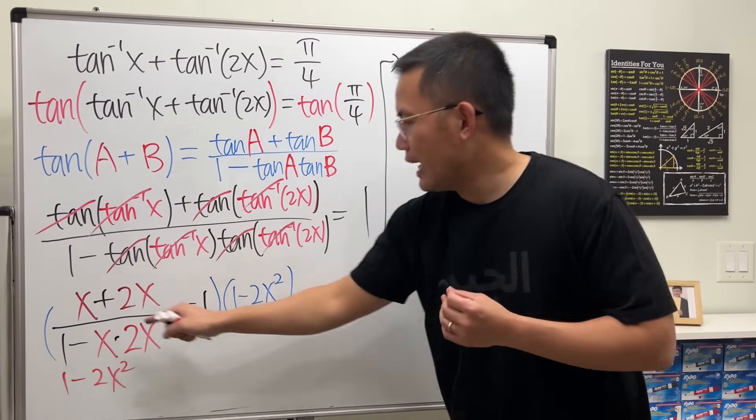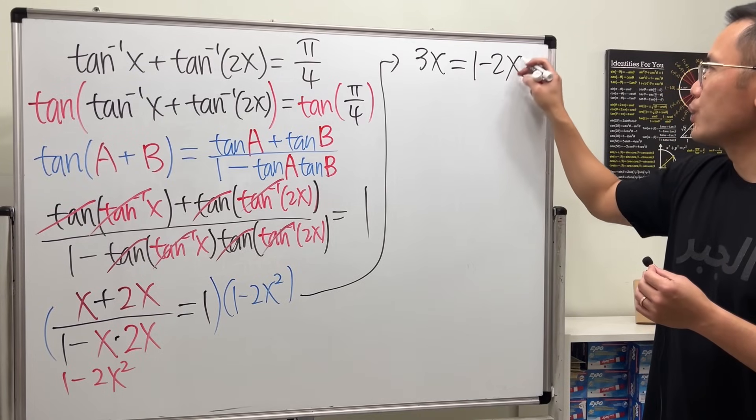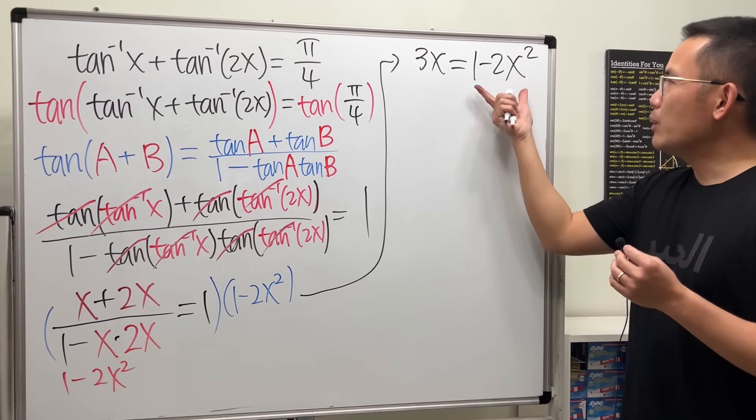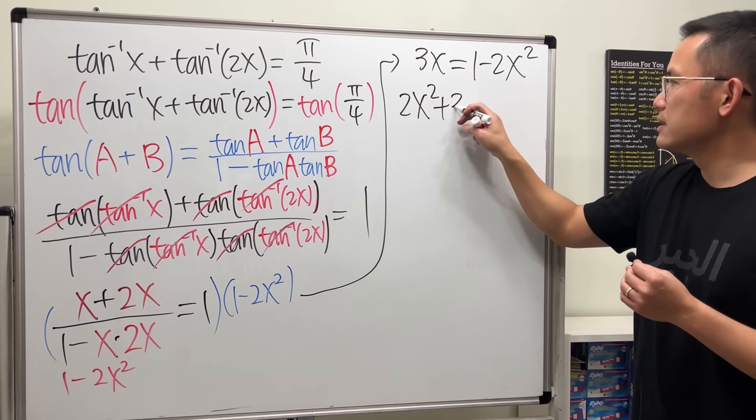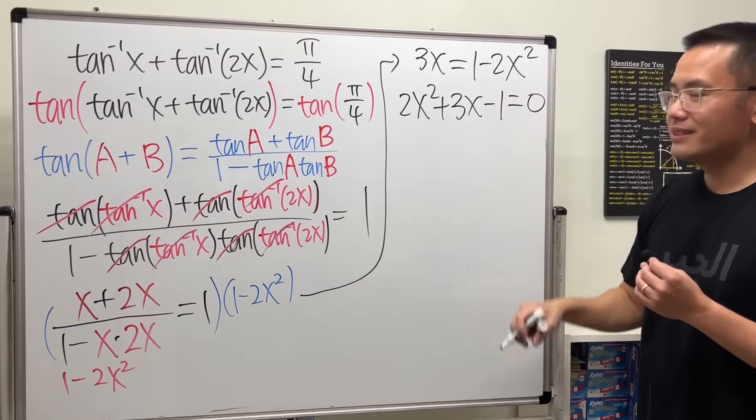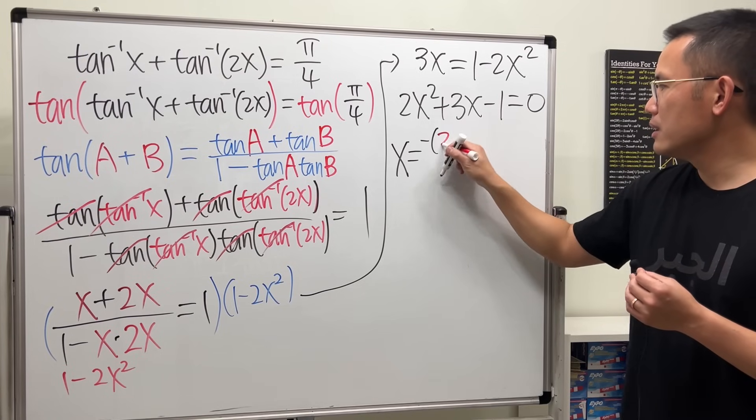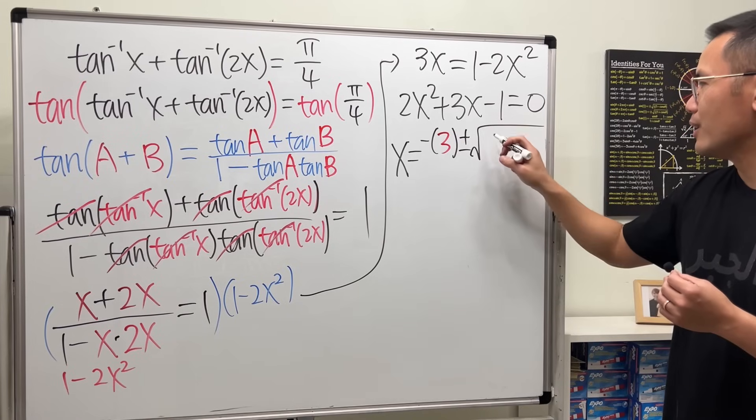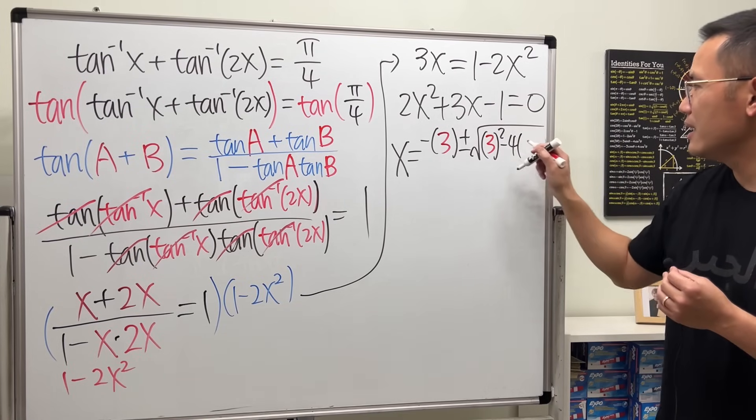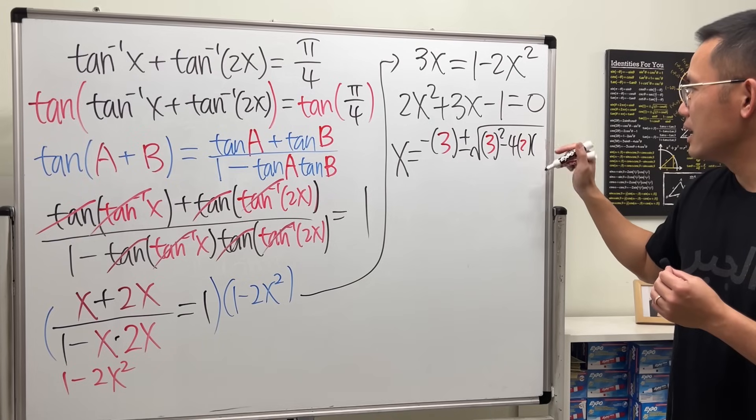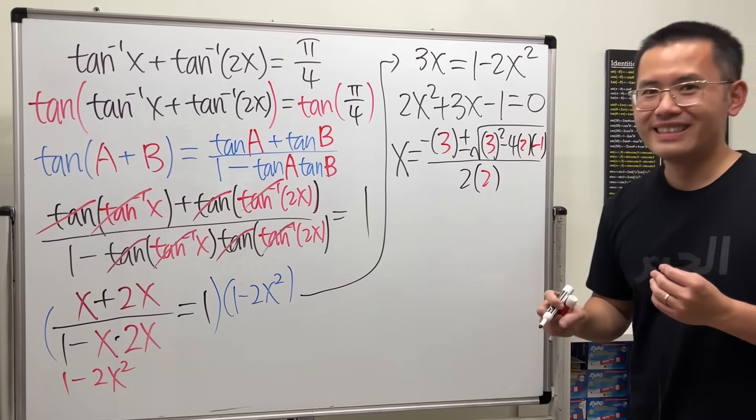And now we get the following. This is just 1 minus 2x squared. So I'm just going to multiply both sides by 1 minus 2x squared, so that this is not canceled. So we get the following. So here we have 3x, and that's equal to this times that, which is 1 minus 2x squared. And now we get a quadratic equation. I will put these two things to the other side, so positive 2x squared plus 3x, and then minus 1, that's equal to 0.